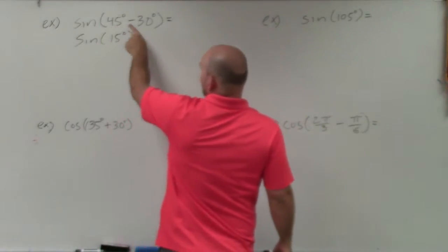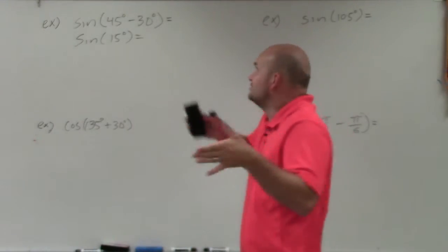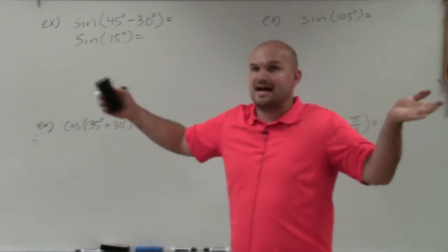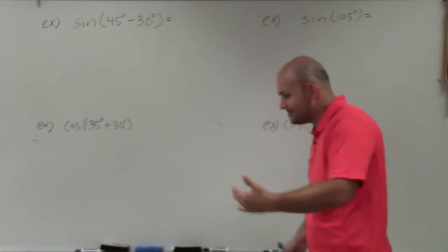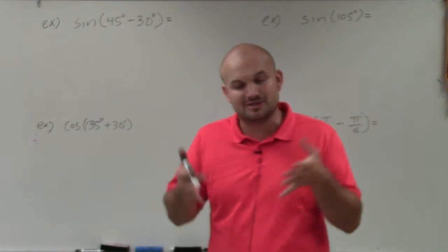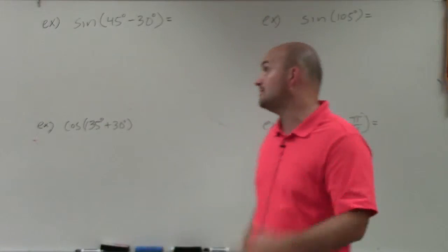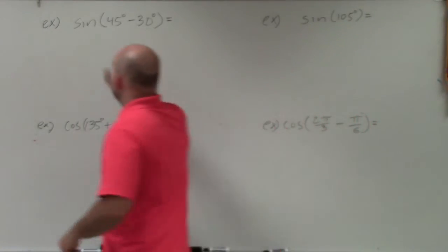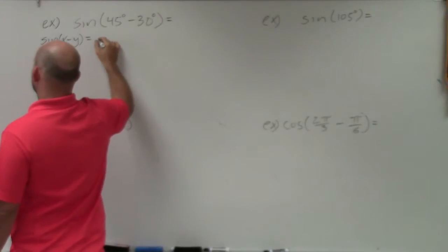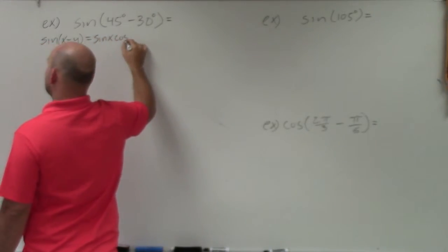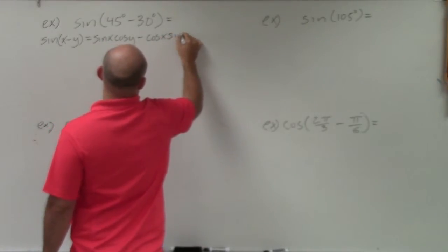We can rewrite 15 degrees as 45 degrees minus 30. We're familiar with sine of 45 and sine of 30, but you're not just distributing the sine — sine of 45 minus sine of 30 is not the same answer. To find the exact value, we use our formulas. The difference formula for sine is: sine of (x − y) equals sine of x times cosine of y minus cosine of x times sine of y.